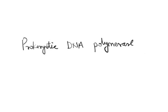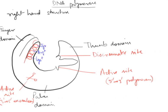Today we are going to discuss the structure and mechanism of prokaryotic DNA polymerase enzyme. DNA polymerase looks like a right-handed structure which consists of three domains: the thumb domain, finger domain, and the palm domain. The thumb domain has a small discriminator site which discriminates between ribonucleotides and deoxyribonucleotides, removing any ribonucleotide which has mistakenly entered into the DNA polymerase.